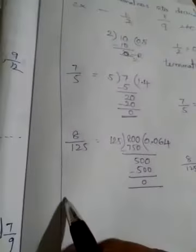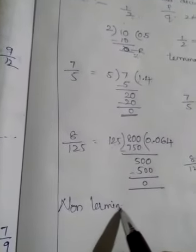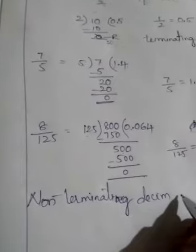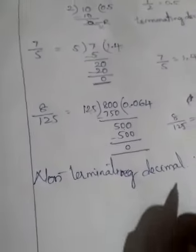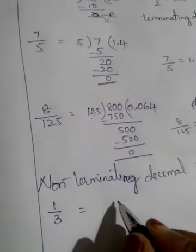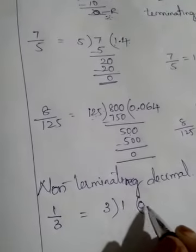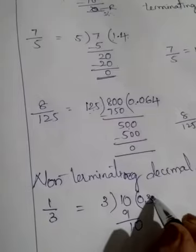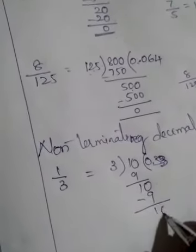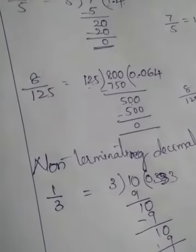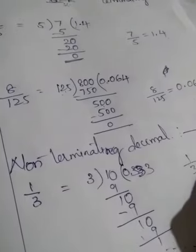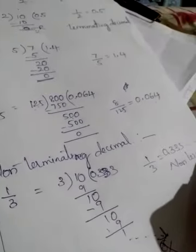Now I am explaining about non-terminating decimals. Non-terminating decimal means if we divide with the denominator, the remainder will not be 0. For example, 1 by 3 — 1 is divided by 3. In the 3 times table: 3 times 3 is 9, then 10 minus 9 is 1 again, once again 3 times 3 is 9 — once again 1 comes, like this it continuously goes on. The remainder 0 is not there.